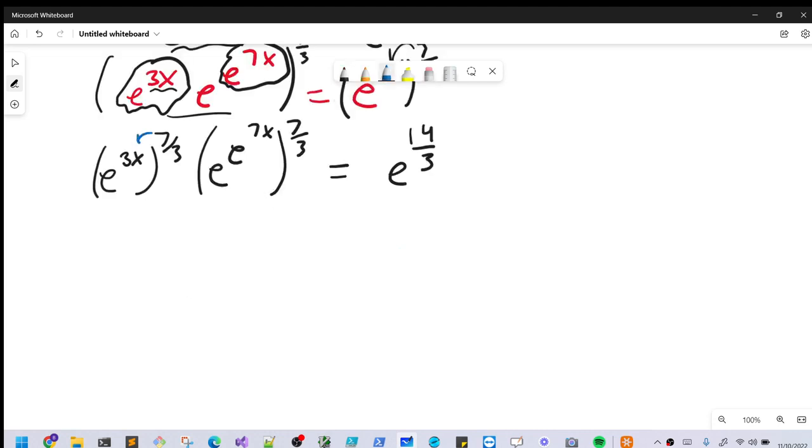And for our next step, we're going to simplify our exponents distributing in here. So for the first term, we multiply 7 thirds times 3x, we're going to have e to the 7x. And then for this one here, we're going to have e to the 7 thirds, e to the 7x. Just multiplying it in front, equals e to the 14 thirds.